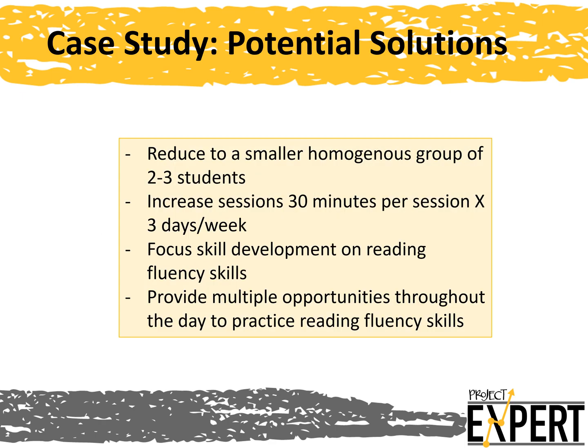Here are some potential examples of the types of adjustments you could make in Juniper's reading intervention to better fit her needs. There may be multiple reasonable adjustments based on the diagnostic data and knowledge you have of Juniper and her educational context. You can reduce to a smaller homogeneous group of two to three students, increase sessions to 30 minutes per session three days a week, focus skill development on reading fluency skills, and provide multiple opportunities throughout the day to practice reading fluency skills.